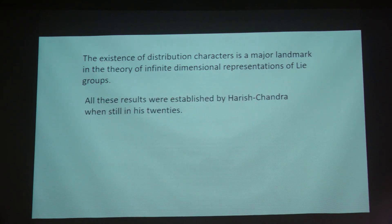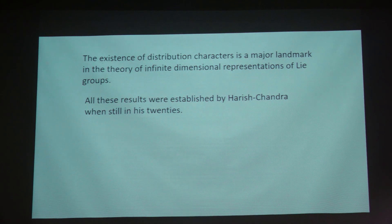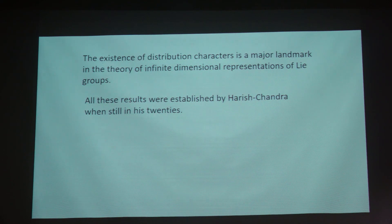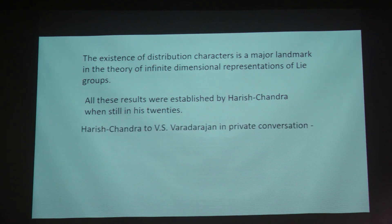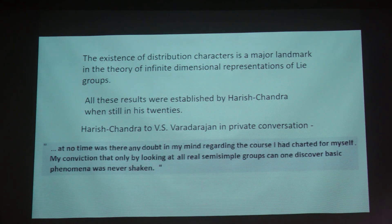All these results were established by Harish Chandra when still in his twenties. People who were very close to him would know that he had results he did not announce right away. For example, he announced the regularity theorem only in the early 1960s when he visited France, though in fact he had the proof of the regularity theorem by around 1958. Harish Chandra told Varadarajan in private conversation: 'At no time was there any doubt in my mind regarding the course I had charted for myself.'